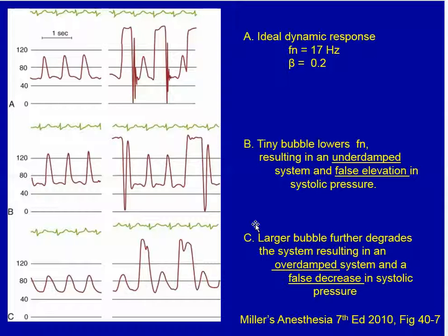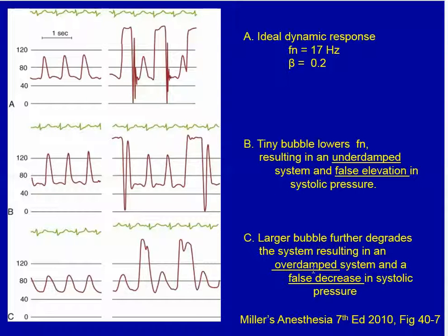This shows the effect of bubbles. Starting from an ideal tracing with a natural frequency of 17 and a damping coefficient of 0.2, adding a tiny bubble results in an under-damped system which lowers the natural frequency and causes false elevation of the systolic pressure. On the other hand, putting a large bubble in the system results in an over-damped system and a false decline in the systolic pressure.